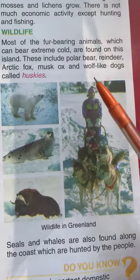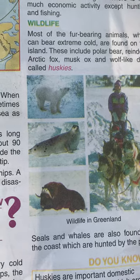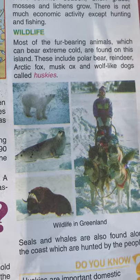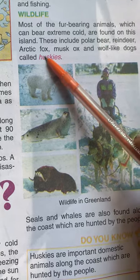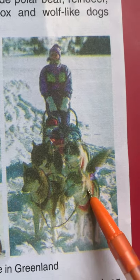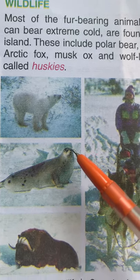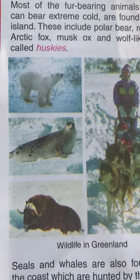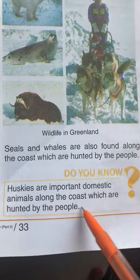Now let us see the wildlife. Because of the excessive cold and snow everywhere, the animals found here are furry animals — fur-wearing animals — like polar bear, reindeer, arctic fox, musk ox, and wolf-like dogs called huskies. Huskies are found near the coastal areas of Greenland. Along the coast, people also hunt whales and seals. Huskies are important domestic animals along the coast.